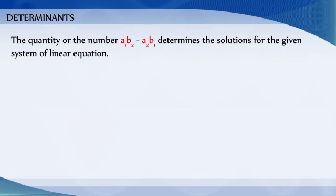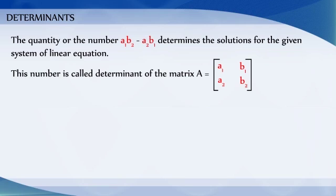Therefore, the quantity or the number a1b2 minus a2b1 determines the solution for the given system of linear equations. This number is called the determinant of the matrix [a1, b1; a2, b2].